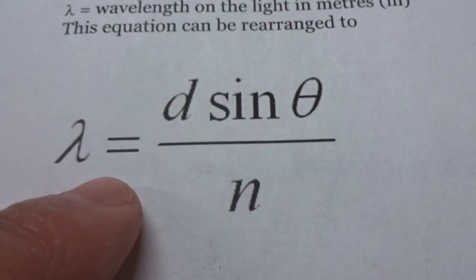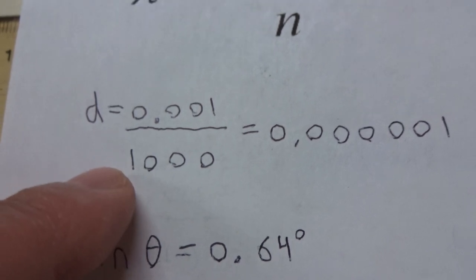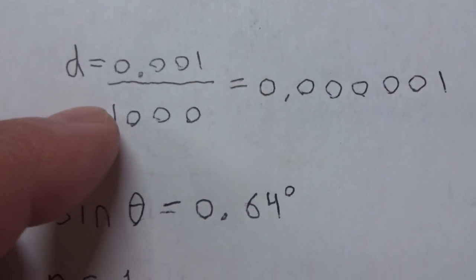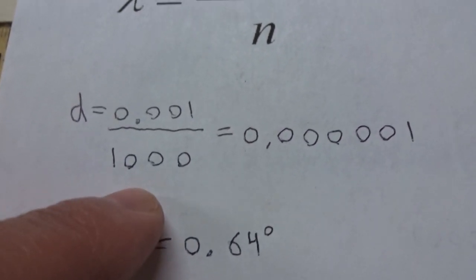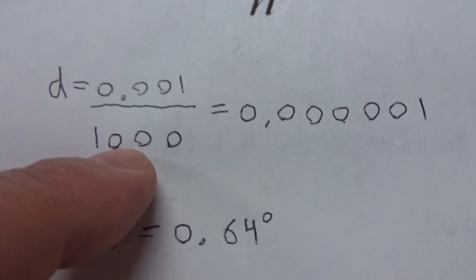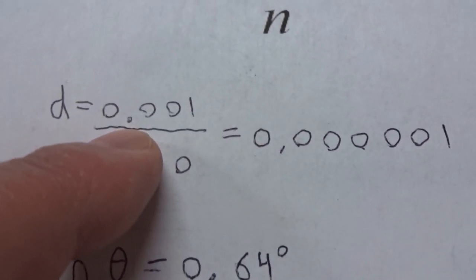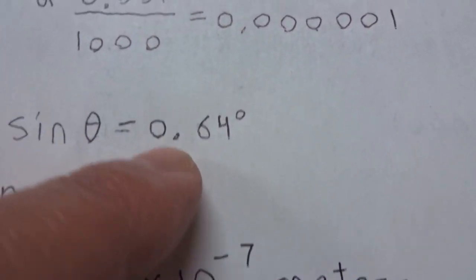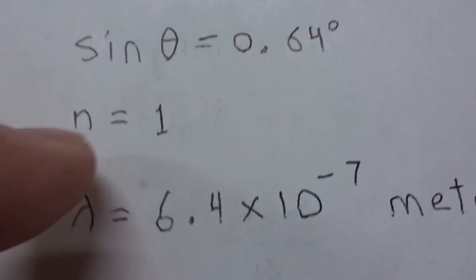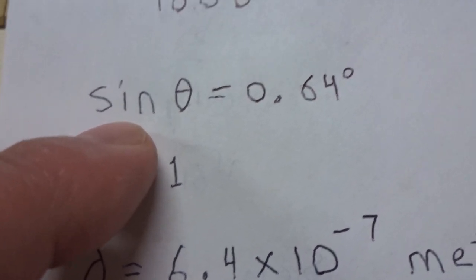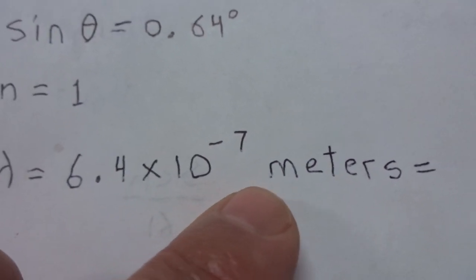This equation can be rearranged, where lambda is the wavelength. Here are my calculations — I put in the variables that I measured into the equation. You divide 1,000 millimeters per space in the diffraction grating between each prism into 0.001 to convert it into metric. Sine theta is 0.64 degrees, N is 1 — we measured the first spacing of the first diffracted laser beam. Lambda came out to 6.4 times 10 to the negative 7 meters.